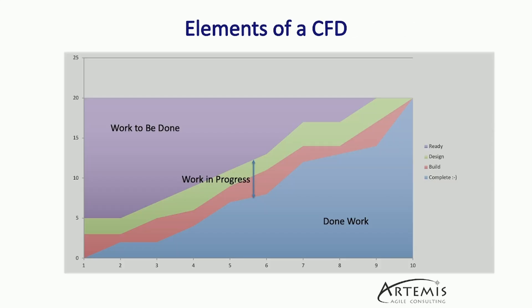The basic elements of your CFD are your different work steps. In this case, we have Ready, Design, and Build as two separate work steps, and then Complete, which is all of the items that have been accepted by our product owner. You can tell how much work is to be done simply based off of the size of the purple area here. You can tell the amount of work that's in progress by seeing how many are in your in-progress states, and you can see that you have a good burnup or not based on where your work done chart is showing.